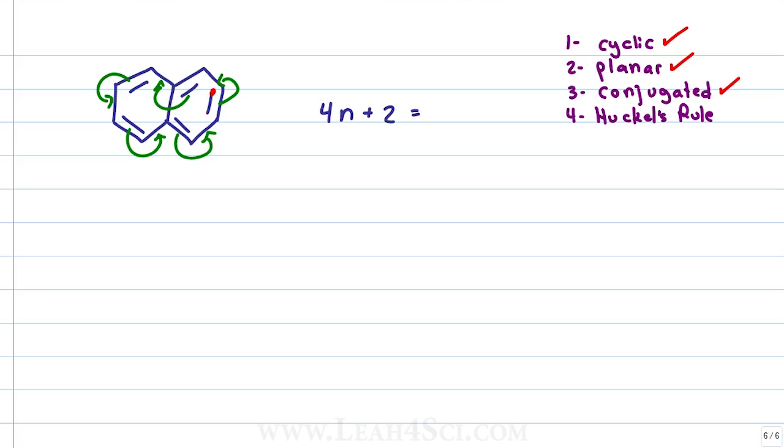Which means we set 4n plus 2 equals 10 electrons. If we solve for n, we subtract 2 on both sides which gives us 4n equals 8, divide both sides by 4, cancels out the 4 and gives us that n equals 8 over 4 which can be simplified to 2 over 1. No this isn't a fraction because any number over 1 is that number, it's a whole number in this case 2. That means a 10 electron system does obey Huckel's rule and is aromatic.